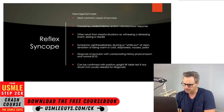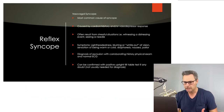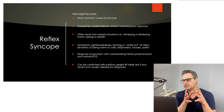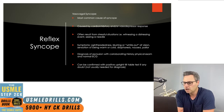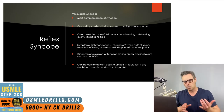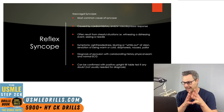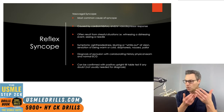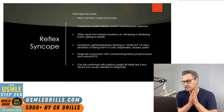The most common form of syncope that you want to be aware of is reflex syncope. This includes a few different kinds: vasovagal, situational, and carotid sinus syncope. Vasovagal syncope can be caused by either autonomic cardioinhibition and/or a vasodilatory response. It can involve parasympathetic activation that results in slowing of the heart rate and decreasing cardiac output, leading to a lack of perfusion of the brain that results in syncope.